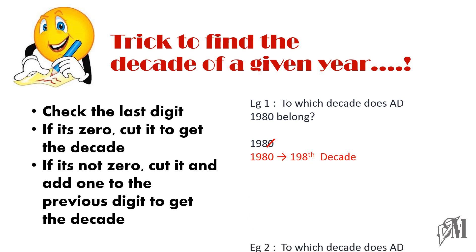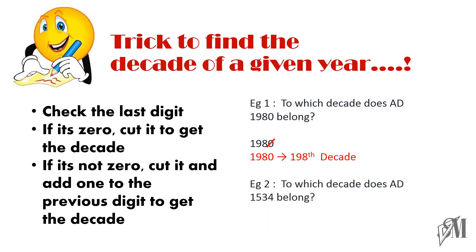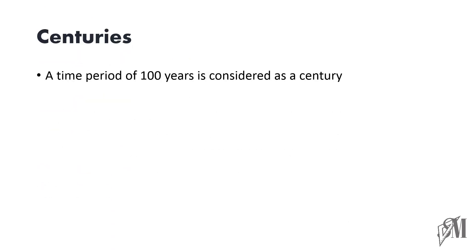If the last digit is not zero, cut it and add one to the previous digit to get the decade. For example, AD 1534 has last digit four — we cut it and add one to 153, giving us the 154th decade. This is a very simple trick to find out the decade of any given year.